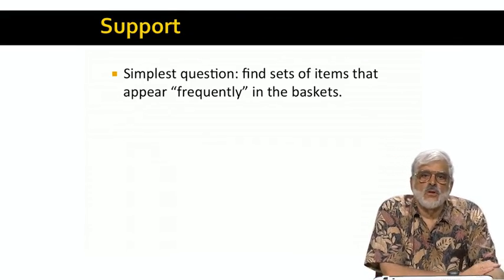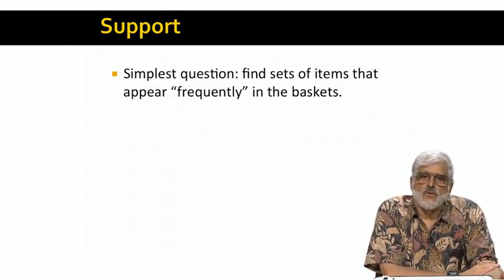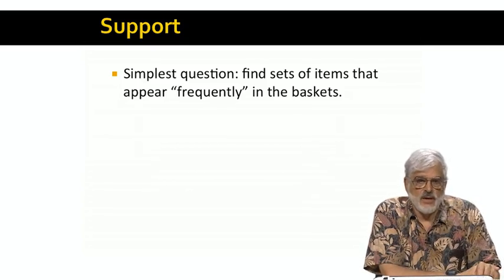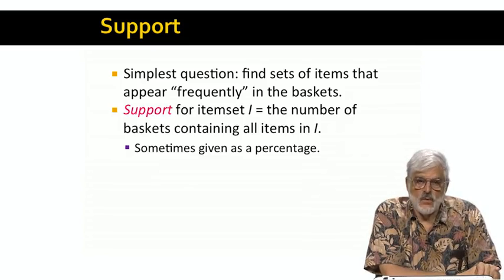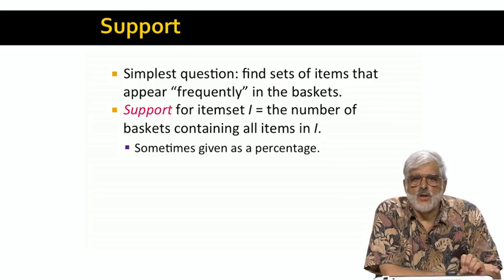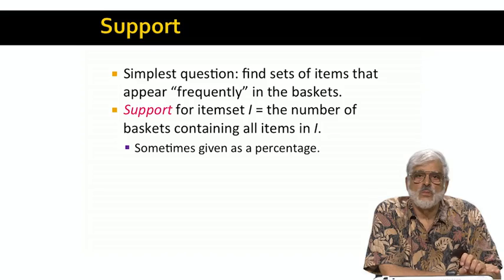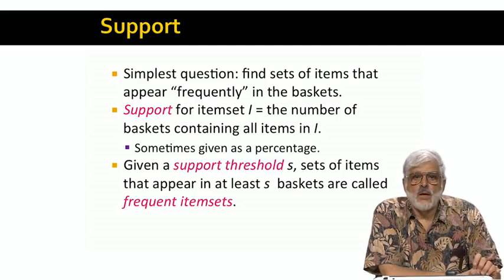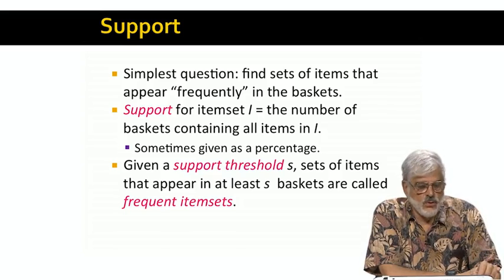The most useful and also most basic question to ask about data in the form of market baskets is to find those sets of items that appear in some minimum number of baskets. We'll define the support for an itemset to be the number of baskets of which that itemset is a subset. We can give the support either as an absolute number or as a percentage of all the baskets. Data mining problem called frequent itemsets involves a number or percentage s called the support threshold. Any set of items with support at least s is called a frequent itemset.